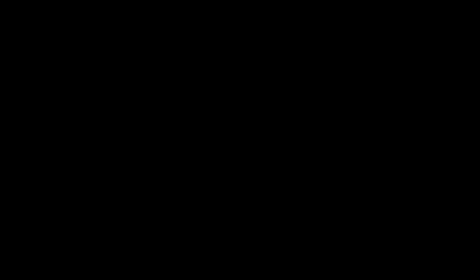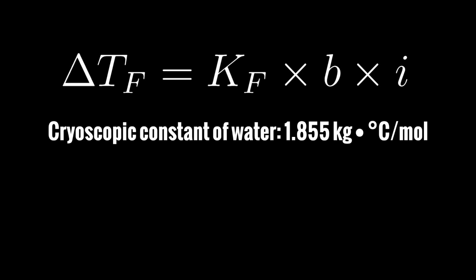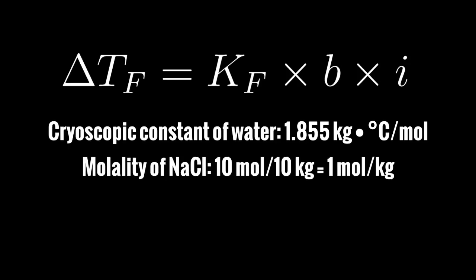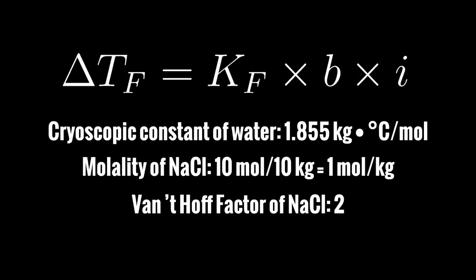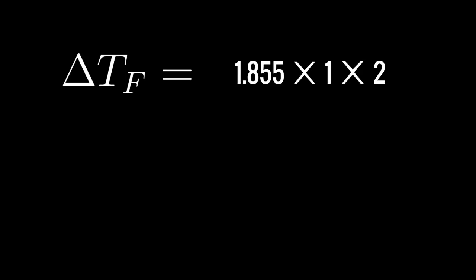So now that you know Blagden's Law, let's take a look at a problem. What is the freezing point of a solution of 10 moles of NaCl dissolved in 10 kilograms of water? Very simple solution, all you have to do is use the law. We know K sub F, that's the cryoscopic constant for water, 1.855 kilograms degrees Celsius per mole. Now we have the molality of NaCl, which is 10 moles per 10 kilograms, or 1 mole per kilogram. Then we have the van't Hoff factor of NaCl, which is 2. And we multiply them together, and our answer for freezing point depression is 3.71 degrees Celsius.